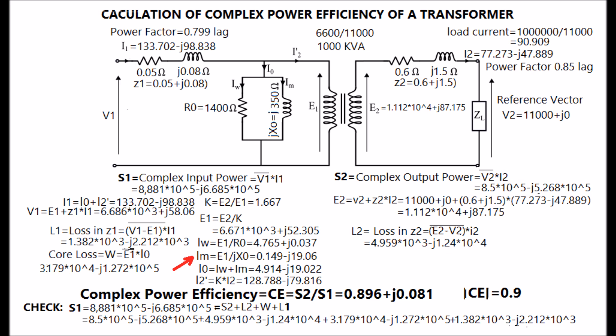Magnetic component I-m can be calculated as E1 by J-X-naught and loss component I-w as E1 by R-naught as shown in the display. By adding I-w and I-m we will get I-naught. I2 prime, equivalent to I2 in the primary side, can be calculated as K into I2 as shown in the display.